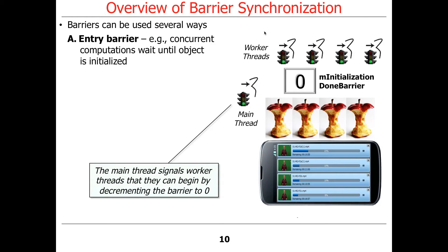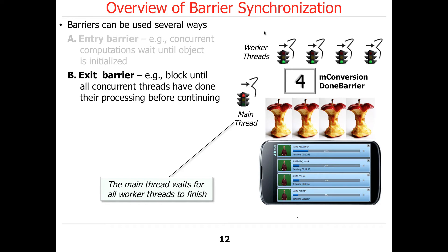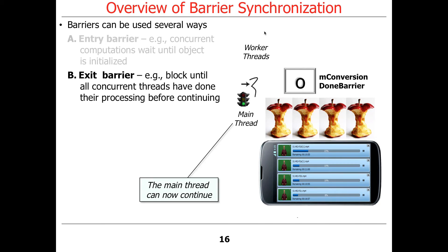Entry barriers are also sometimes called latches — you're latching the start of something. Another form is the exit barrier, which blocks all threads until they're all finished. They all wait at a common point, and only when they're all done do you continue on. For example, the main thread starts all the worker threads, does a few things, then waits for all worker threads to finish before doing something else. If you have four threads, the barrier has a count of four; as each thread leaves it decrements the count, and when it reaches zero the main thread continues.